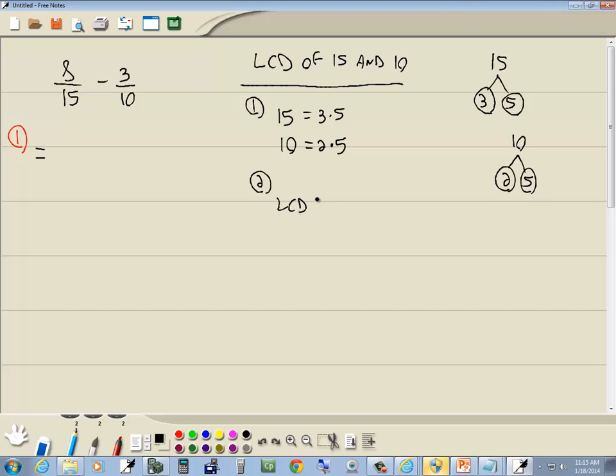Our LCD. We start with our first prime, 2. We're looking for the greatest number of 2s in any single line. There's none here, 1 here, so the greatest number of 2s in any single line is 1. We go to our next prime, 3. I'm looking for the greatest number of 3s in any single line. There's 1 here, there's none here, so the greatest number of 3s in any single line is 1.